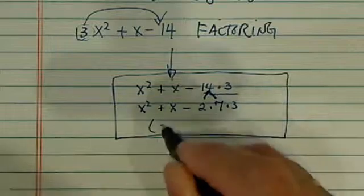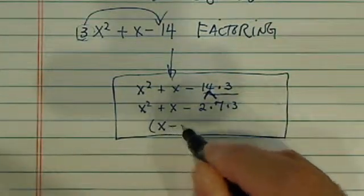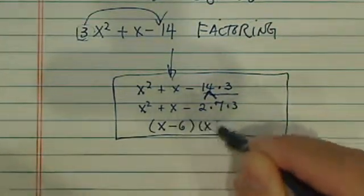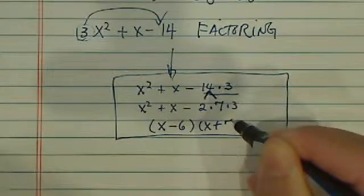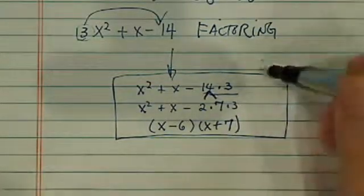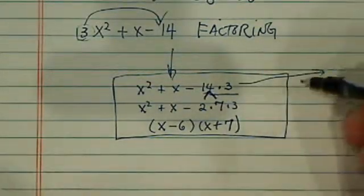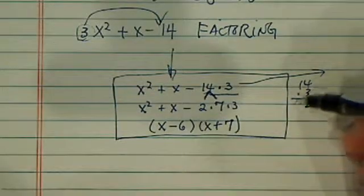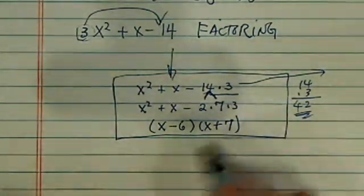To factor this one, it's pretty easy. I have x minus 6, x plus 7, because it's 42. Let's see, 14 times 3 is 42. So 6 and 7 here.